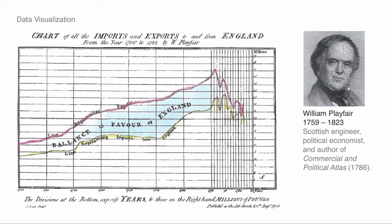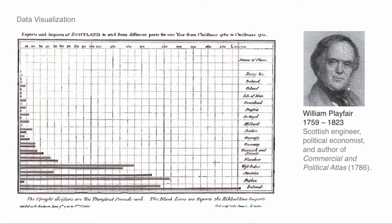These are some of the early time series — trade data. You can see the imports into England and the exports out of England, so you can basically see the trade balance over time. One thing Playfair always did was integrate words into his graphics. A lot of the early figures do this, though for a long time scientific research figures stopped doing it — but words are back, and that's the feeling of a lot of recent work. This is one of the first bar charts, where the black lines denote exports and the ribbed lines are imports, distinguishing between different countries.